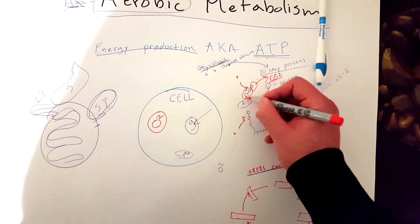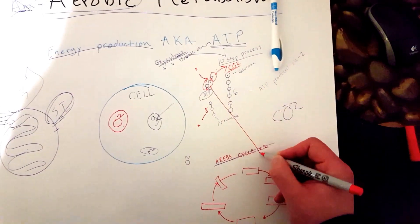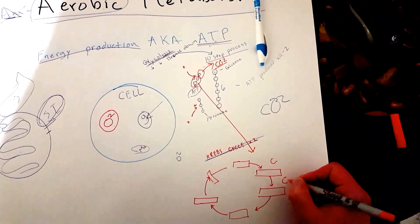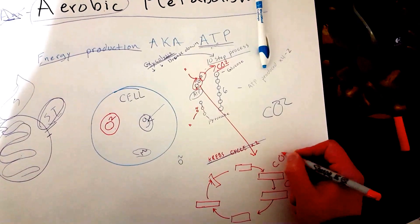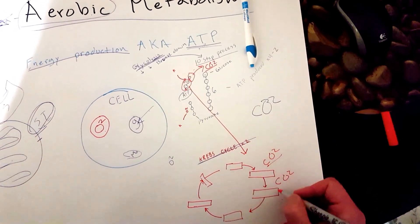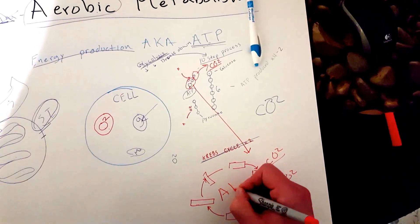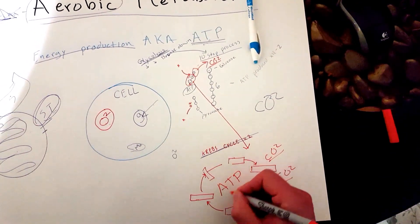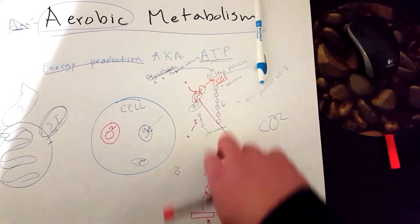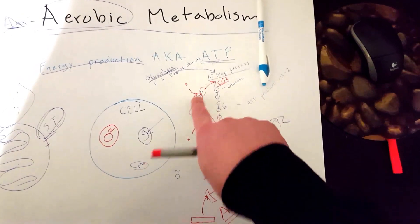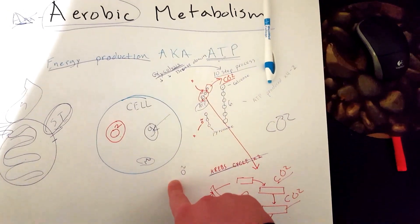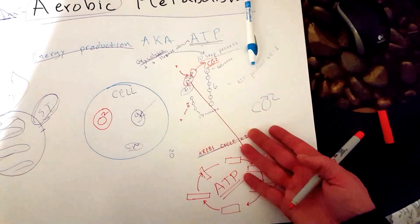each carbon molecule will be converted into CO2. And this is going to be a byproduct of making ATP. Obviously, each one goes into its own Krebs cycle. So, this one's going to go into its own Krebs cycle. This one's going to go into its own Krebs cycle. And it's going to produce ATP.